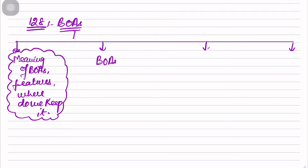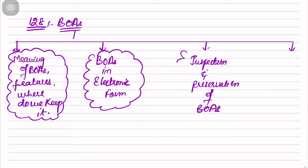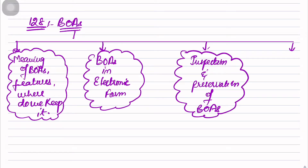In the second column we'll understand Books of Accounts in electronic form. In the third column we'll understand inspection and preservation of Books of Accounts. And last, we'll understand key responsible persons and penalty on non-compliance.